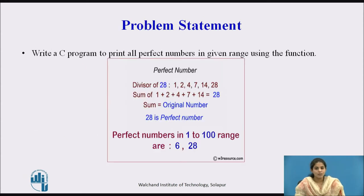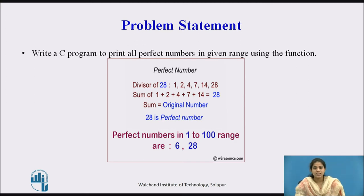In this session we see the problem statement: write a C program to print all the perfect numbers in the given range using a function. First of all, what is a perfect number? A perfect number means the sum of its positive divisors excluding the original number, if equal to the original number, then the number is a perfect number.